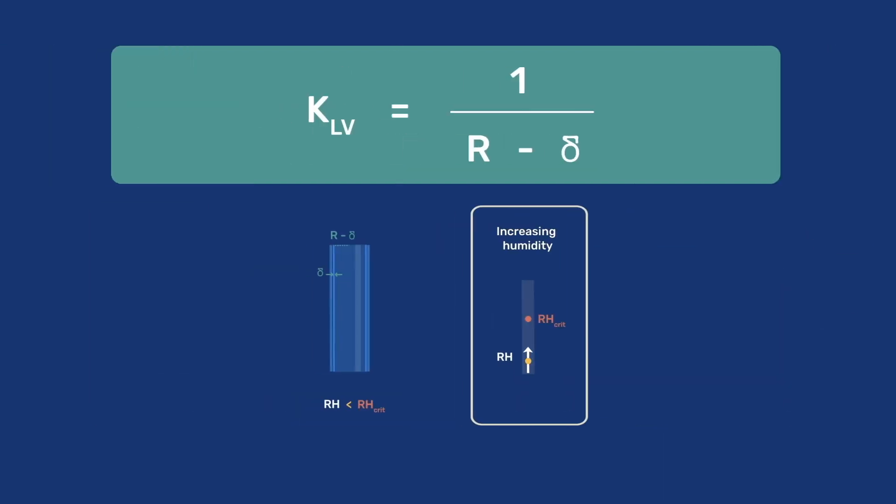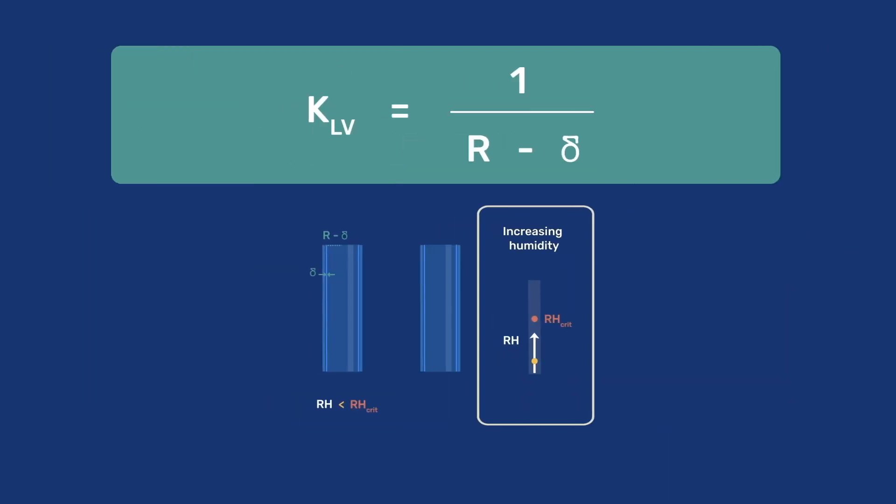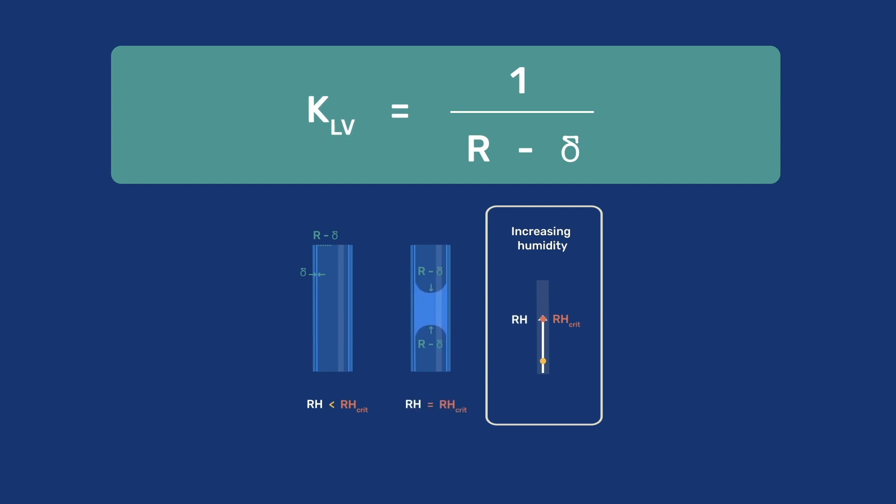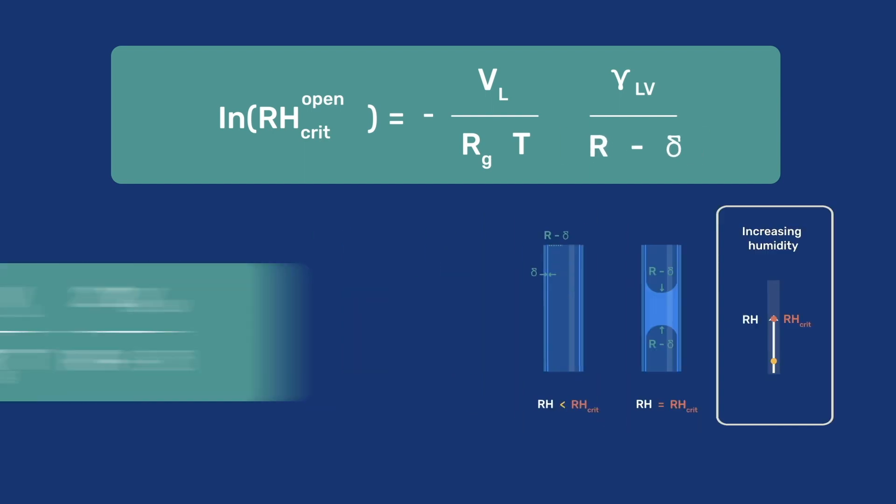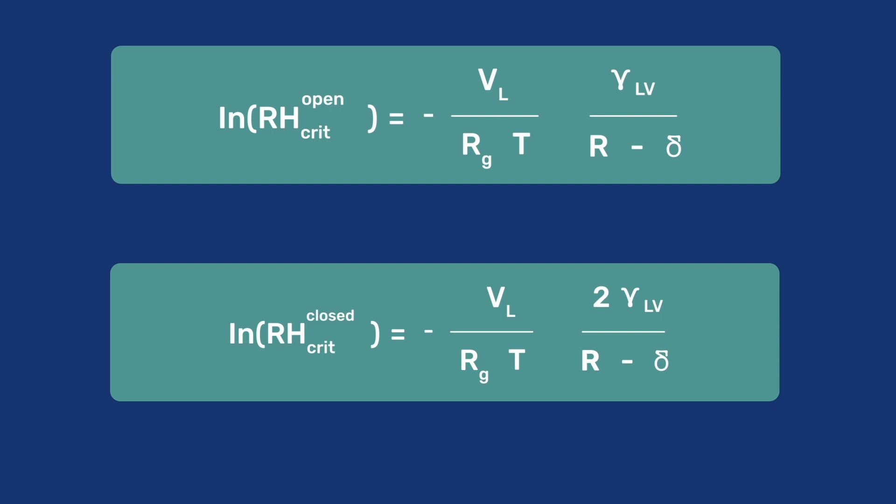In an open tube, condensation creates an adsorbed film with a curvature kappa LV equals one over R minus delta. So the tube fills at a higher critical relative humidity defined by minus VL over RT times gamma LV over R minus delta. This is similar to our previous equation, but does not include the factor 2.